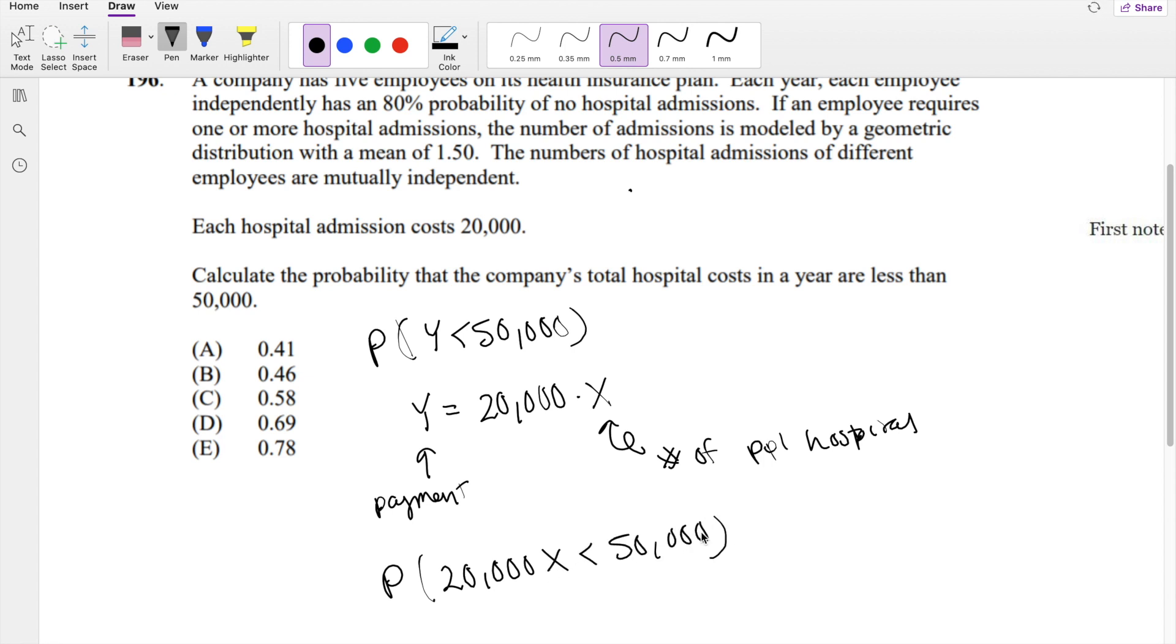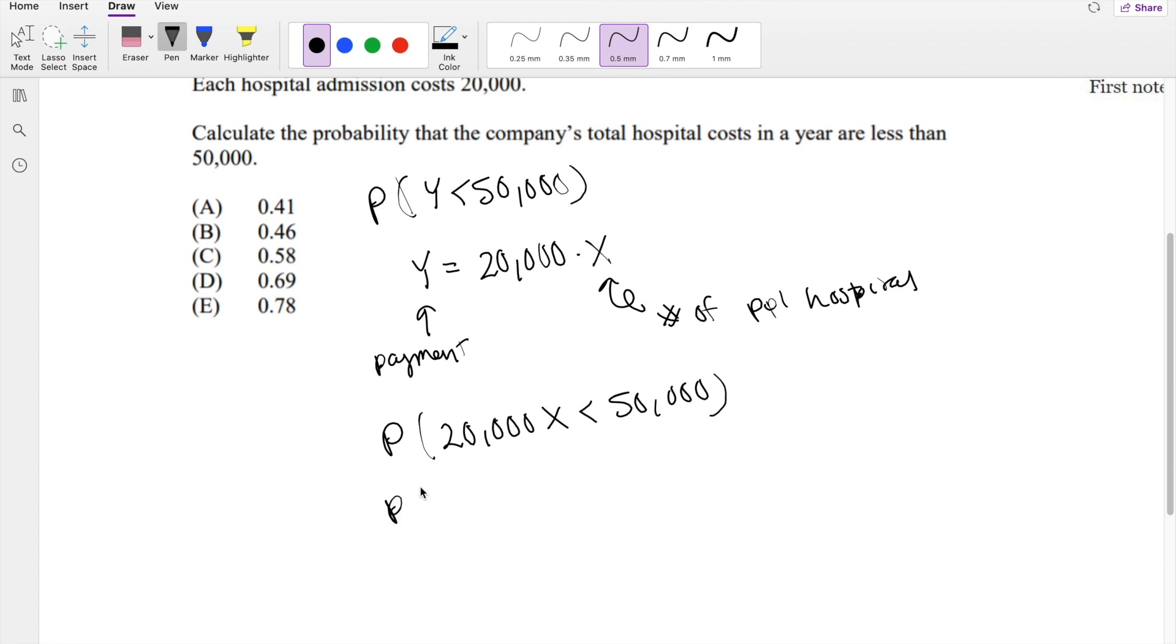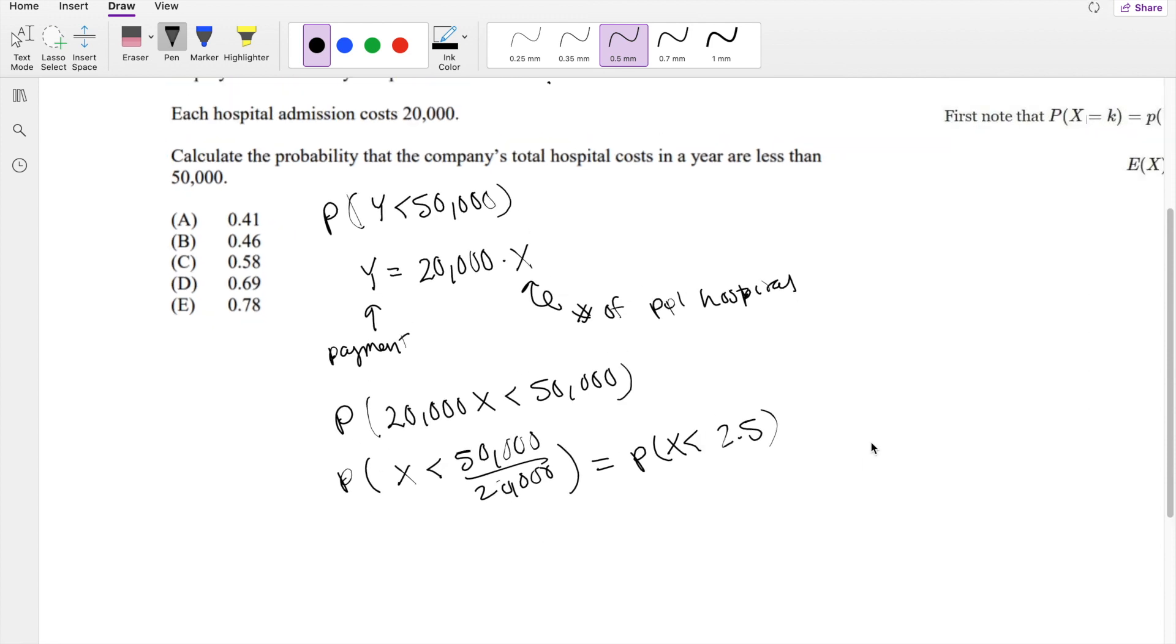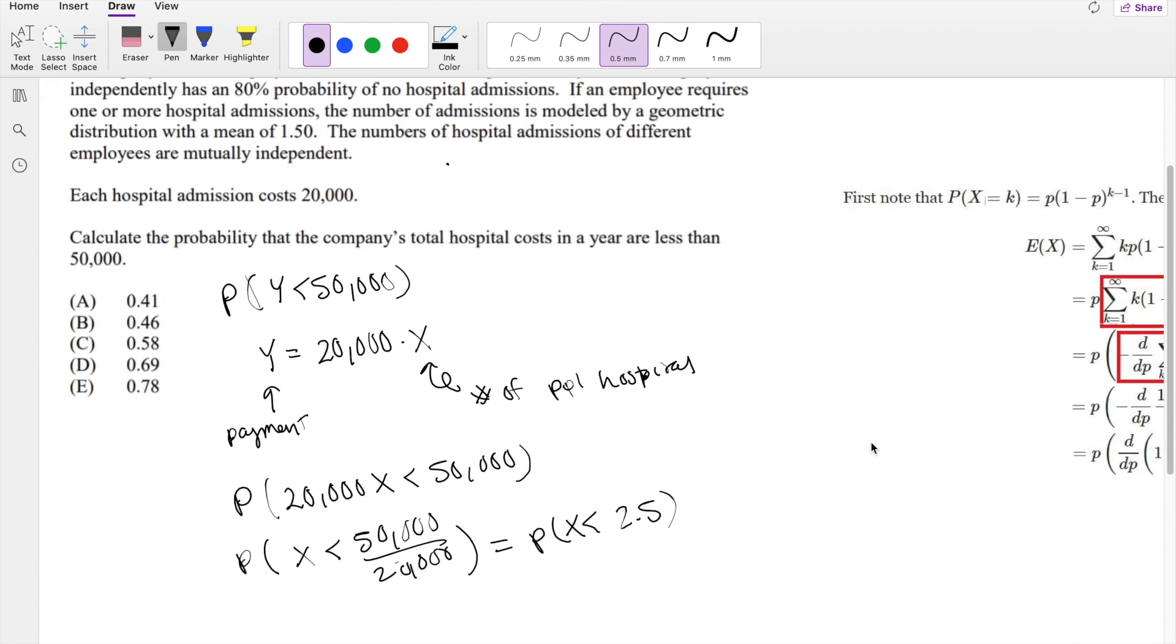So this is essentially saying, what is the probability that the number of people hospitalized is less than 50,000 divided by 20,000? So this is basically the probability that X is less than 2.5. What is the probability that the number of people hospitalized is less than 2.5?